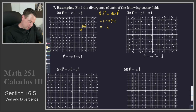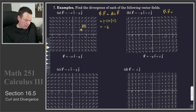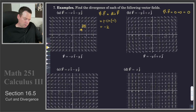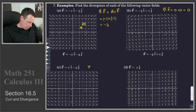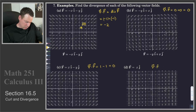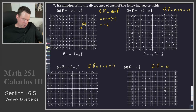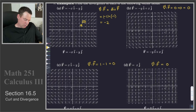How about the next example? The divergence in this case is given by the x-derivative of y, which is 0, plus the y-derivative of x, which is 0 — so this has a divergence of 0. How about the next one? The divergence of this is 1 minus 1, which is 0. And lastly, the divergence of this one is the x-derivative of 0, plus the y-derivative of x, which is 0, plus the z-derivative of 0 — so all those are 0. This has a divergence of 0 as well. So these other three cases all had divergence of 0.